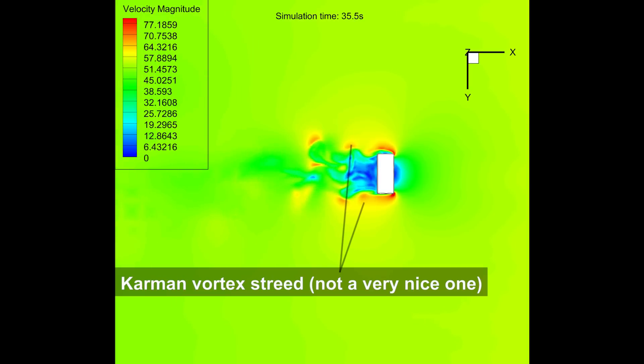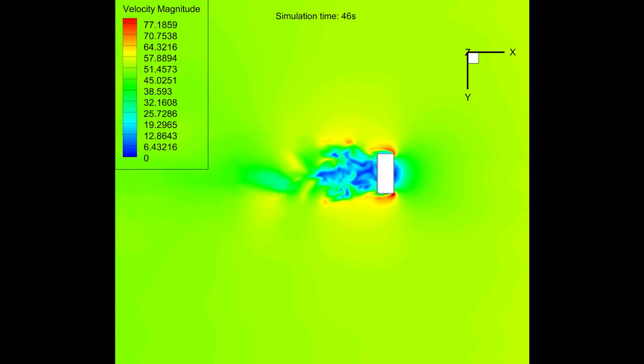The flow detaches from the edges of the camera and forms a common vortex street. This is particularly well visible in this view from underneath. You notice that the flow is not at all symmetric, although the geometry is.